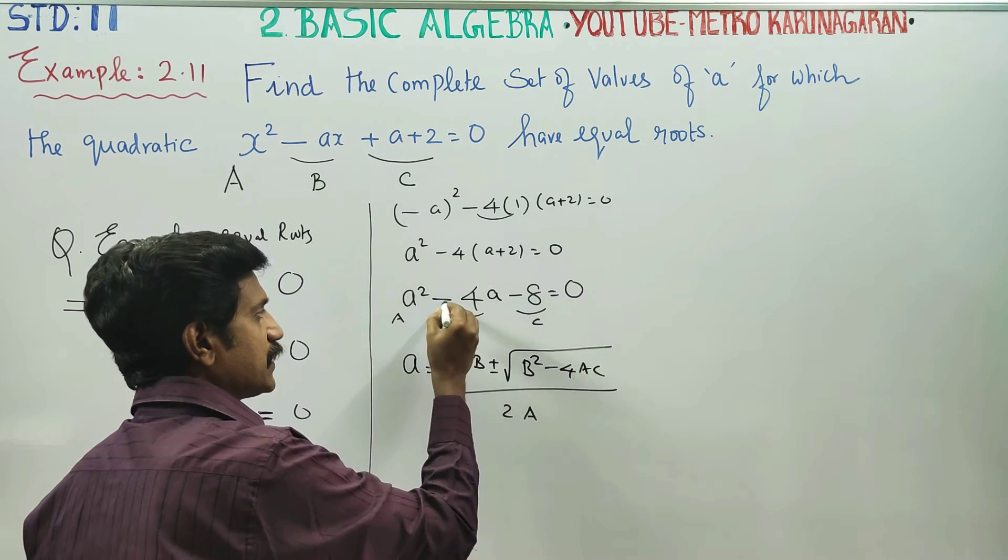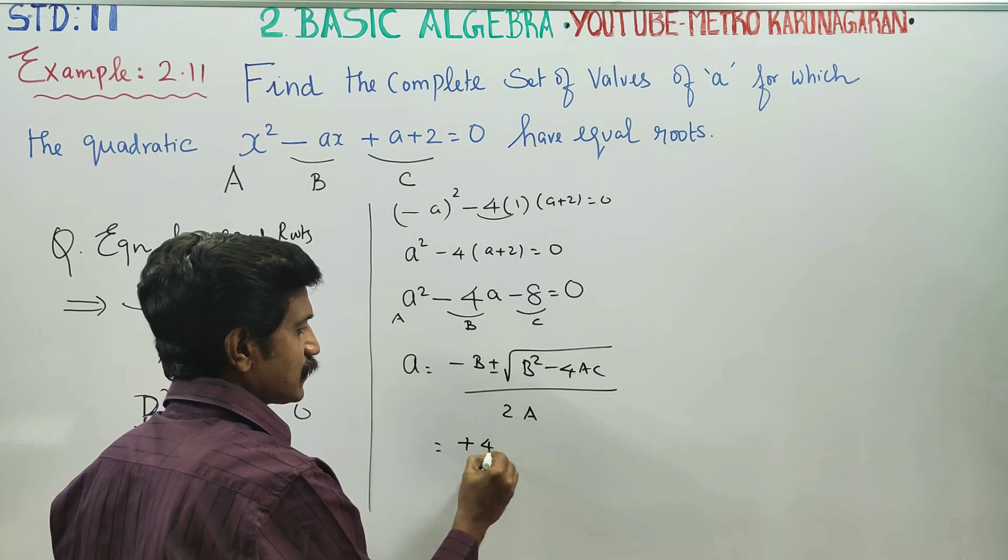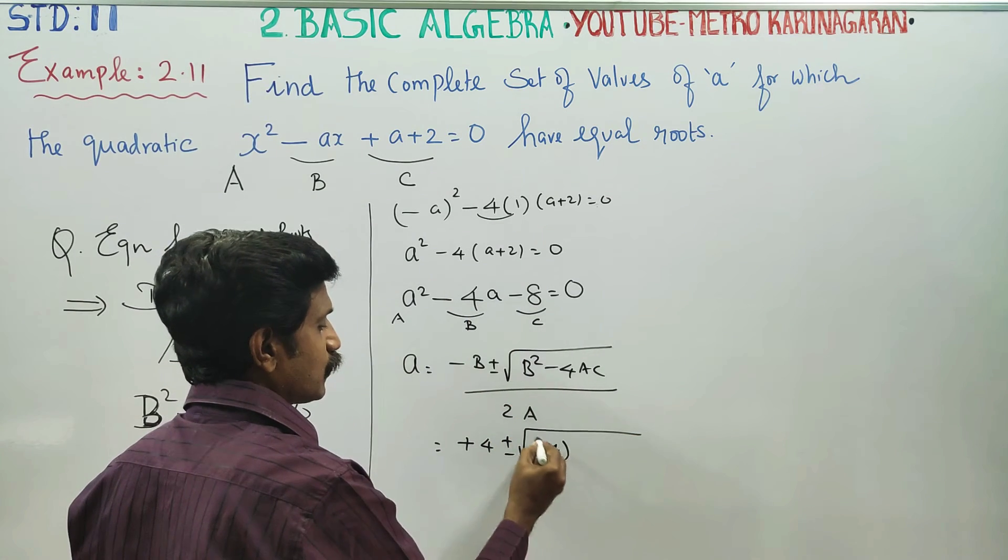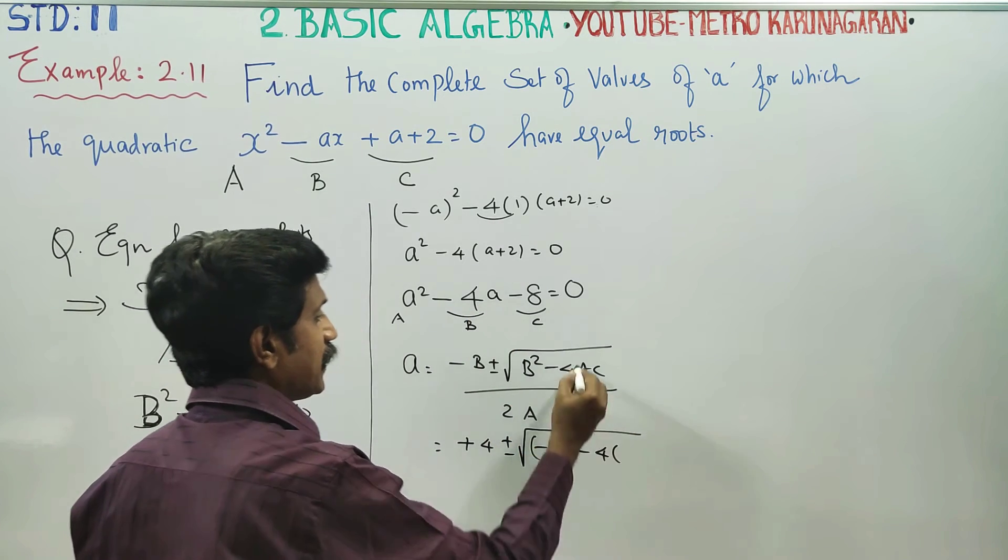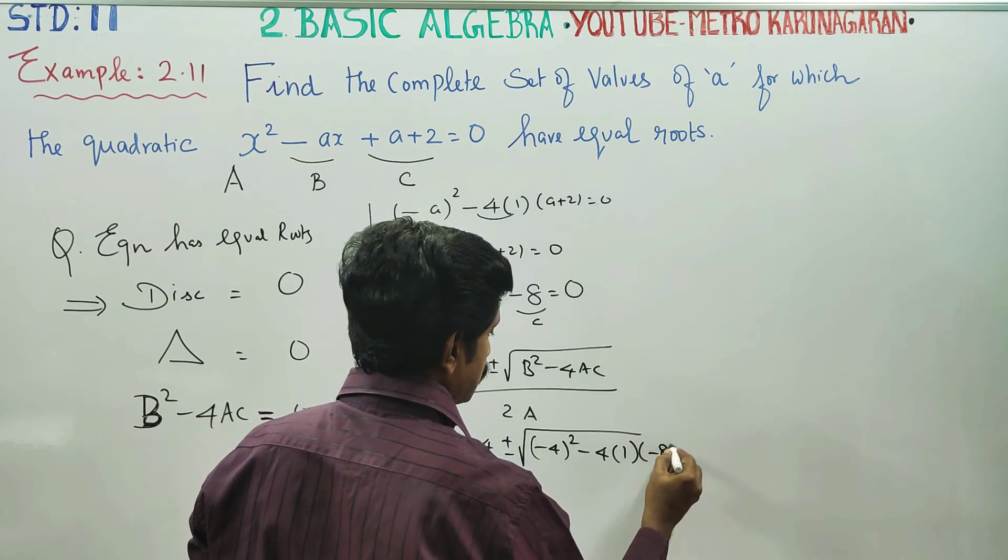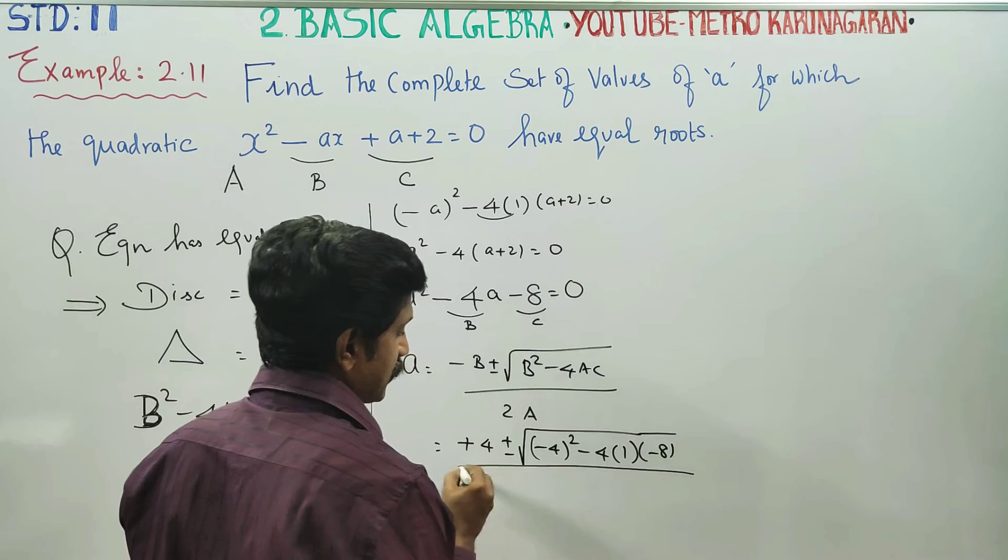A equals minus B, the minus of minus is plus 4, plus or minus square root of B square minus 4 whole square, 4 into A into C. A is 1 and C is minus 8. Minus 8. Divided by 2A. 2A is 2 into 1.